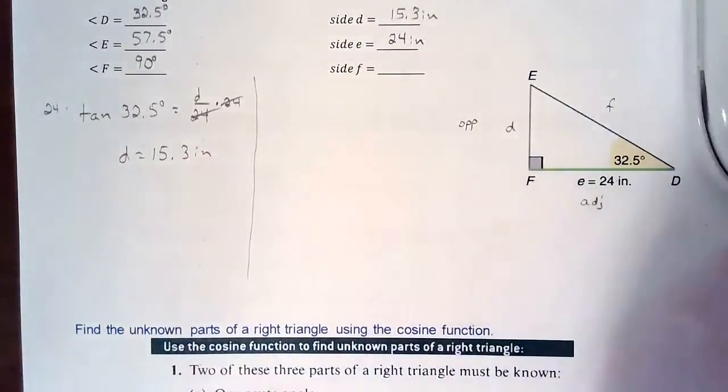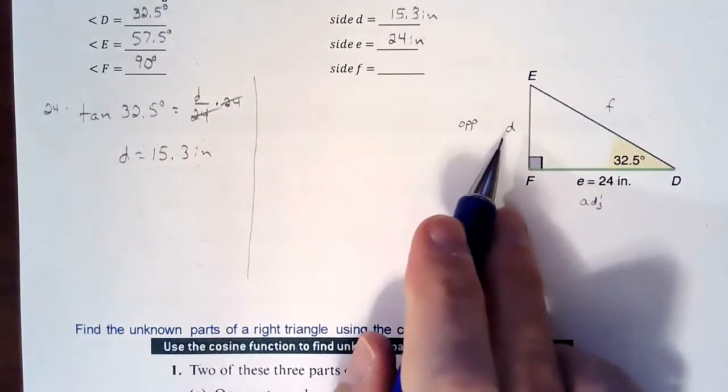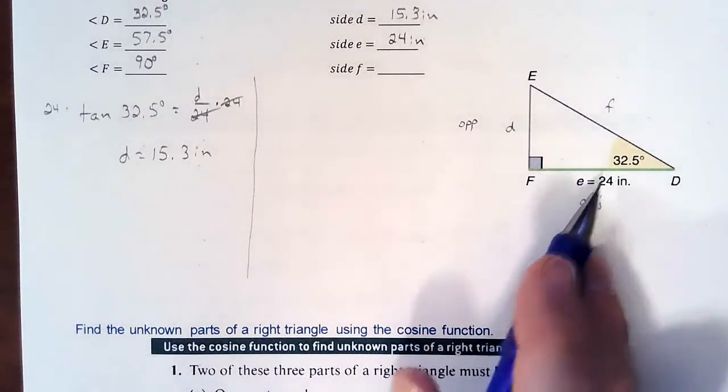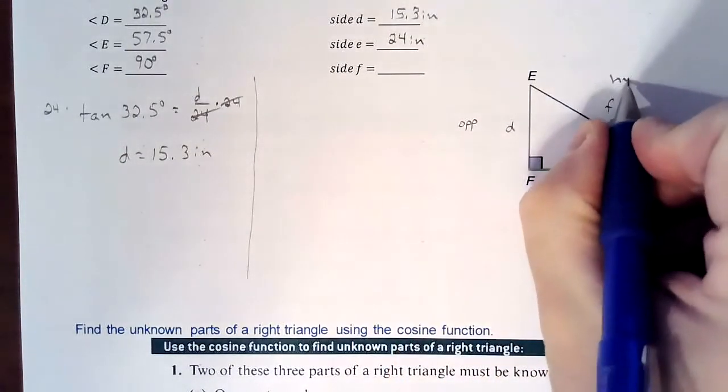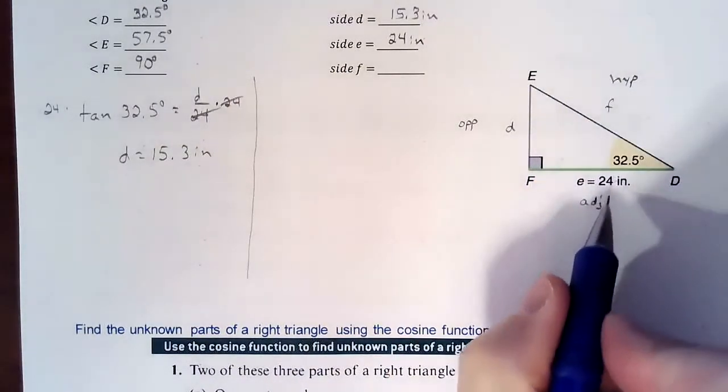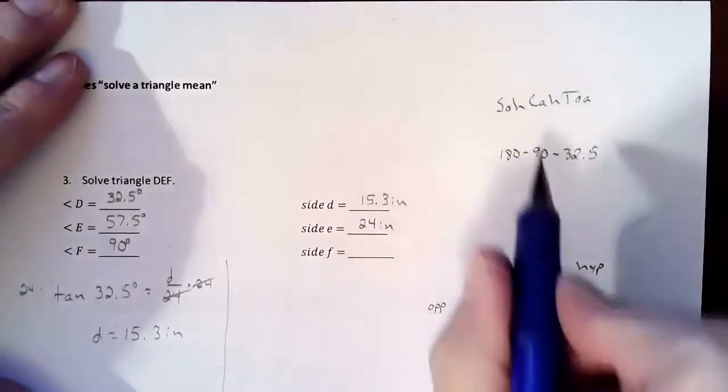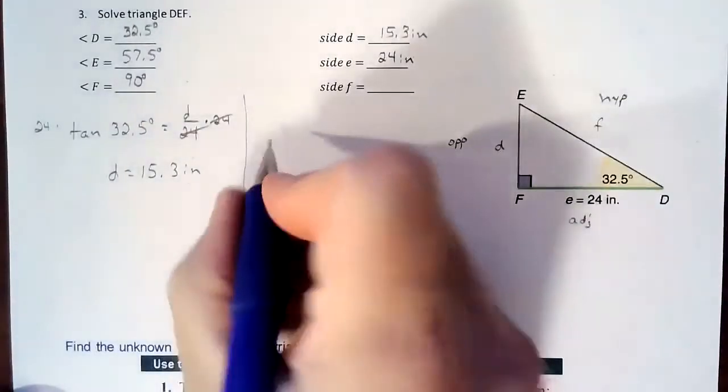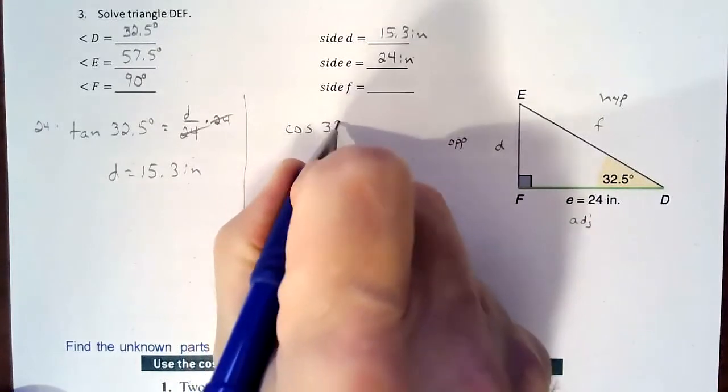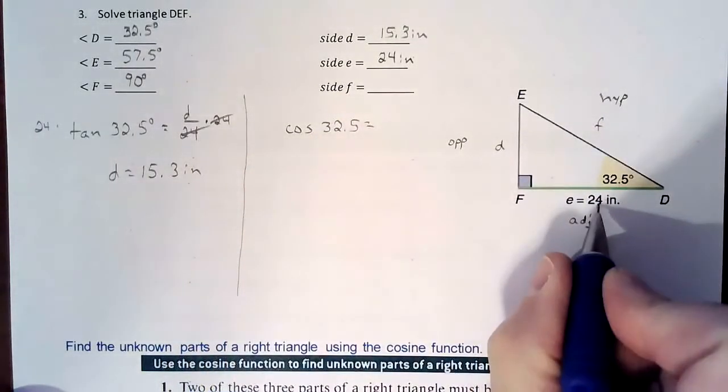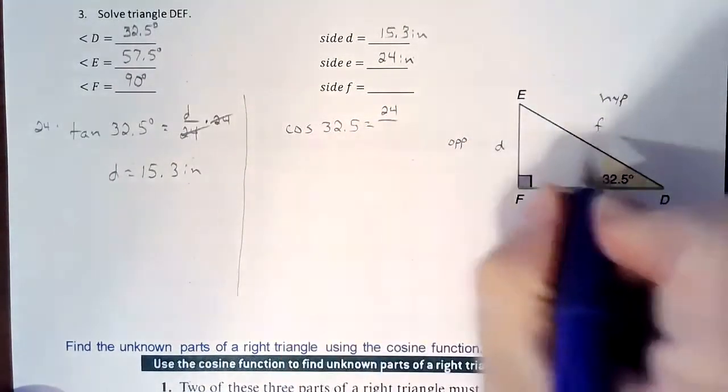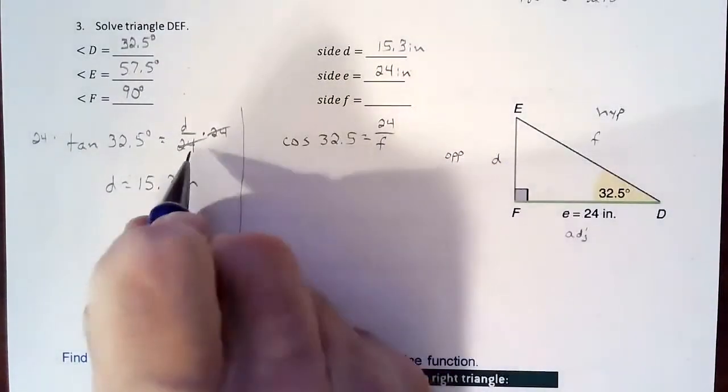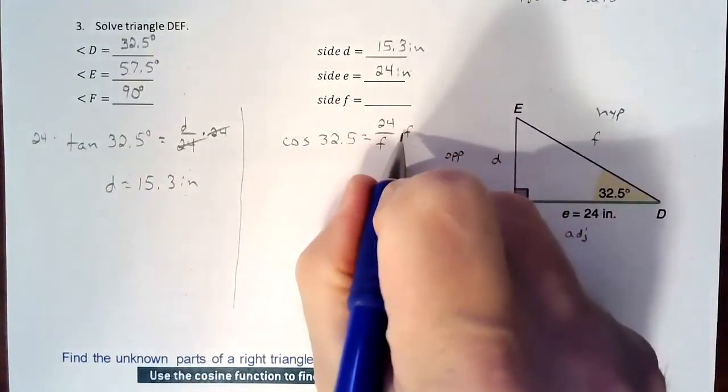And then if I'm looking for F, I'm going to try not to use any new information that I just found. So I'm strictly going to try and stick with using 32.5, using 24, and trying to find the hypotenuse. So from this angle I know the adjacent, I'm looking for the hypotenuse. So if I know the adjacent and I'm looking for the hypotenuse, that's telling me I should be setting up a cosine. So cosine of our 32.5 is going to equal the adjacent over the hypotenuse, 24 over F. And this one's a little bit trickier, a little more work, but I do still want to treat the same thing. I want to clear out my fraction, but unfortunately it's a variable that I'm multiplying over.